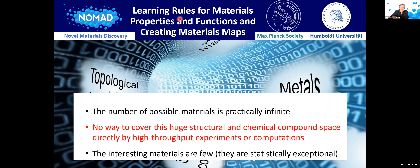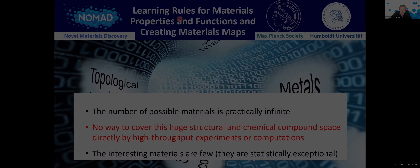This implies that it's very likely that materials exist that we don't know so far and that have novel properties, or that have a performance in their function that is better than that of materials we know to date. Or it may be that some known materials have properties that have not been recognized so far. The question is: how can we find these exceptional materials? And that, of course, is also the question of materials square.